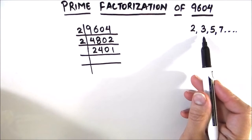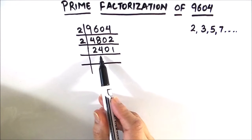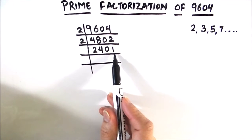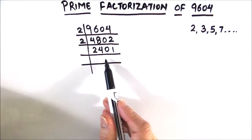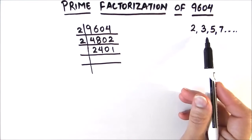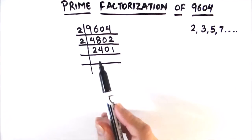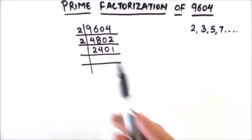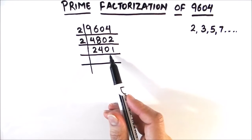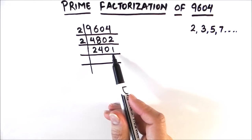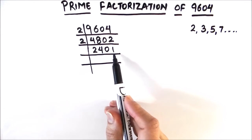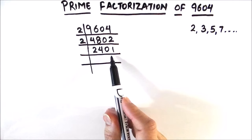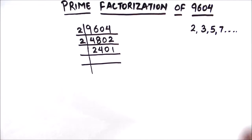3 times 8 is 24, 3 times 0 is 0, and 1 remains, so 2401 is not fully divisible by 3. We try the next prime number, 5. This is not divisible by 5 either, because for a number to be divisible by 5 the units digit must be 0 or 5, and it is not in 2401.